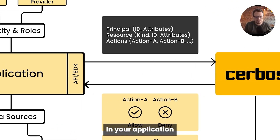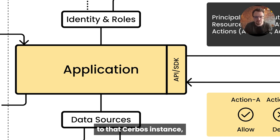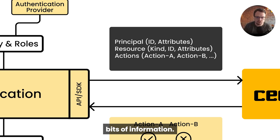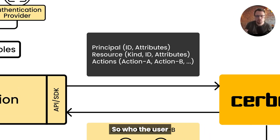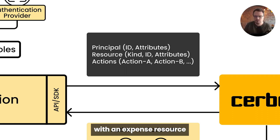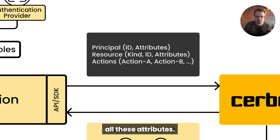In your application code base, now, rather than hard-coding that logic, you send a request out to that Cerbos instance. That request contains three bits of information. The principal — so who the user is, their ID, what attributes, teams, etc., they belong to. The resource — so they're trying to interact with an expense resource, or an invoice, or a purchase order, and all those attributes.